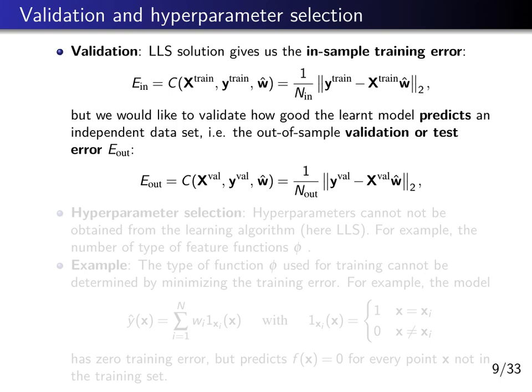However, in general when we also want to do hyperparameter optimization and then test the quality of a model obtained after hyperparameter optimization, we will actually need three different data sets. So we will have a training, validation, and test error. But right now we only have two sets: the training set, or in-sample set, and the validation set with the corresponding validation error.